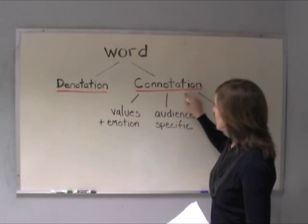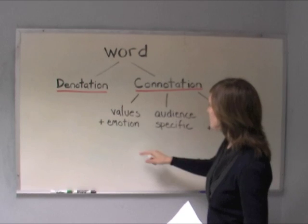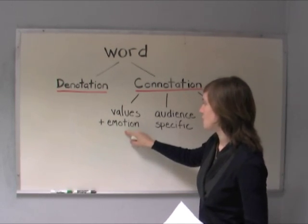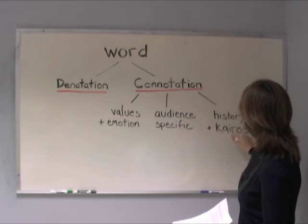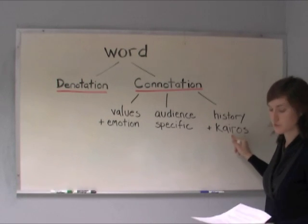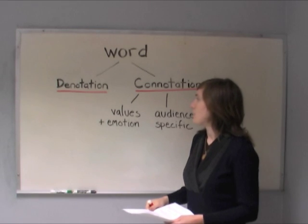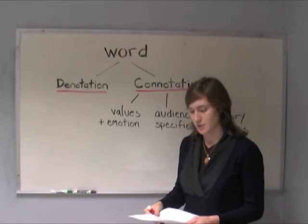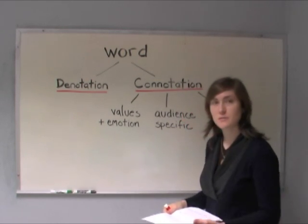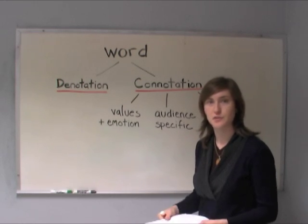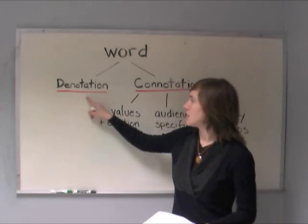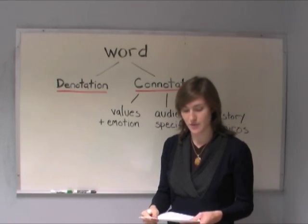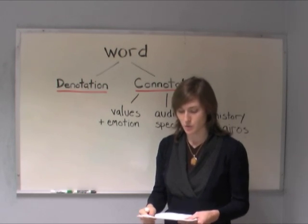Connotation refers to the meanings associated with words. Those meanings can be related to values and emotions, or pathos. They can be specific to the audience you're speaking to, and they can be related to history and kairos. Now, I'm going to give you a few examples so you can start to understand what this means. Let's take some examples from your work last year on the DREAM Act. Think about the word 'citizen.' The denotation of citizen is a native or naturalized member of a state or nation who owes allegiance to its government and is entitled to its protection.